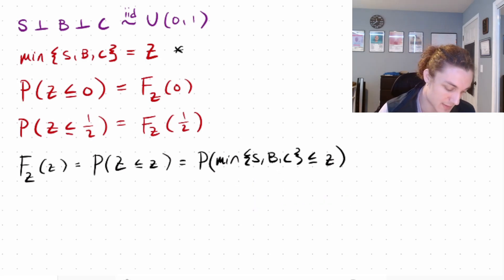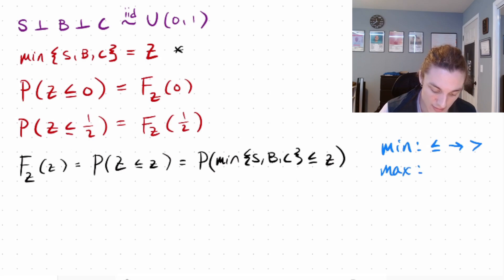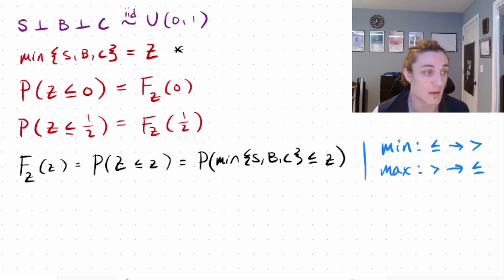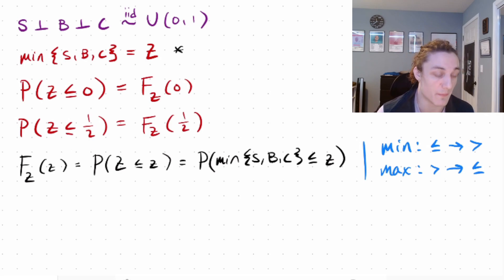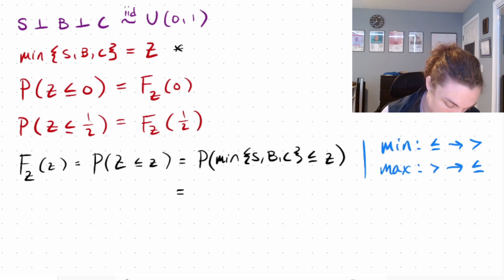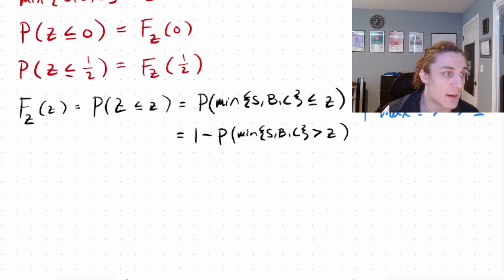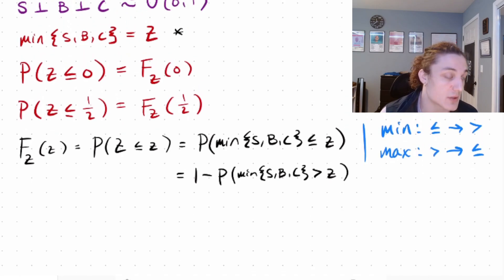The trick I always use when I see a min or max function is: if you see a min with a less-than-or-equal-to inequality, transform it into a greater-than. For a max function, if you see greater-than, transform it to less-than-or-equal-to. We apply this using the complement rule: F_Z(z) = 1 − P(min(S,B,C) > z). This makes it very simple to create an equivalent probability statement, and you'll see why in a moment.